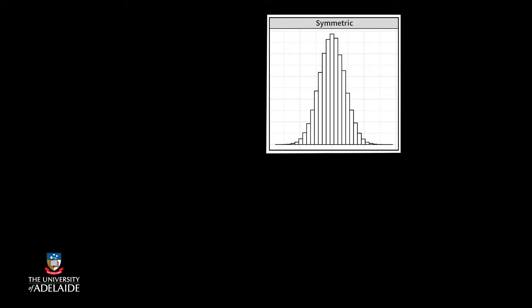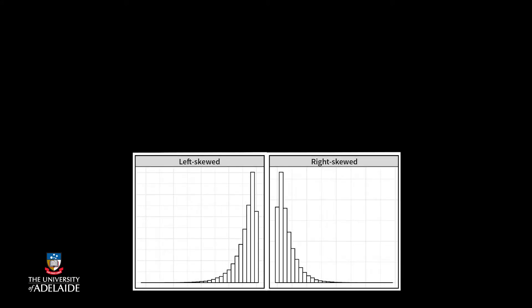Next, is it symmetric or not? If you draw a line down the middle, does the left look like a reflection of the right? If yes, then it's symmetric. If no, then it's skewed. If it's skewed, is it left or right skewed? Looking at these plots, the first one is left skewed — the bottom left points to the left — while the other is right skewed, with the bottom right pointing to the right.